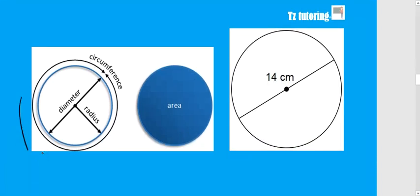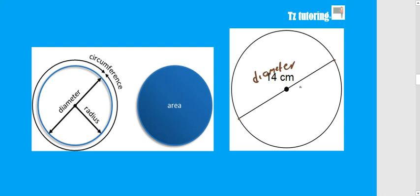For a circle, the distance around the circle is not called perimeter — it is called the circumference. The space inside the circle is your area. Important to note is the relationship between the radius and the diameter. The distance from one end of the circle to the other end is your diameter. The distance from the center to the end of the circle is called the radius. So if the diameter is 14, then your radius would be 7, because 7 centimeters plus 7 centimeters gives you 14.